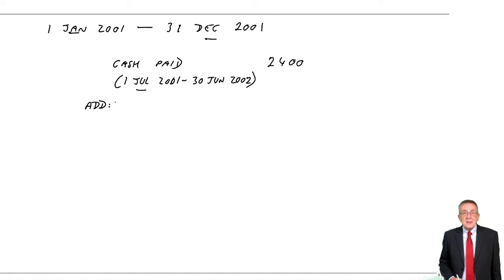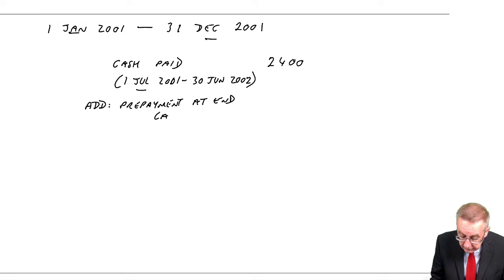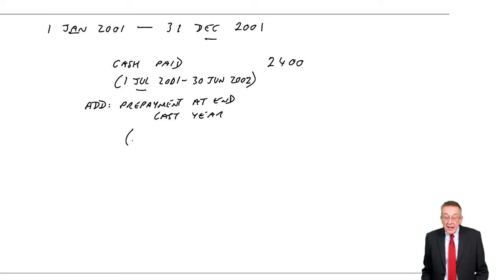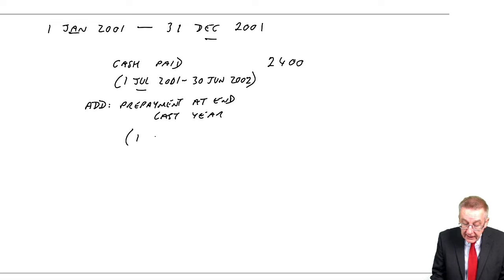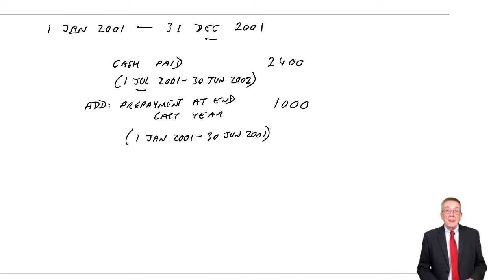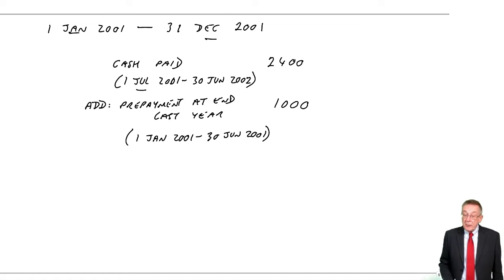But I want to know not how much cash did she pay, but what is the actual cost of insuring for January to December. The cash paid was for the period 1st July 2001 through to June 2002. I want to know the expense for January 2001 to December 2001, so I'm going to have to adjust for two things. First of all, that cash paid doesn't include the first six months of our year, so we need to add on how much was for the first six months of this year.